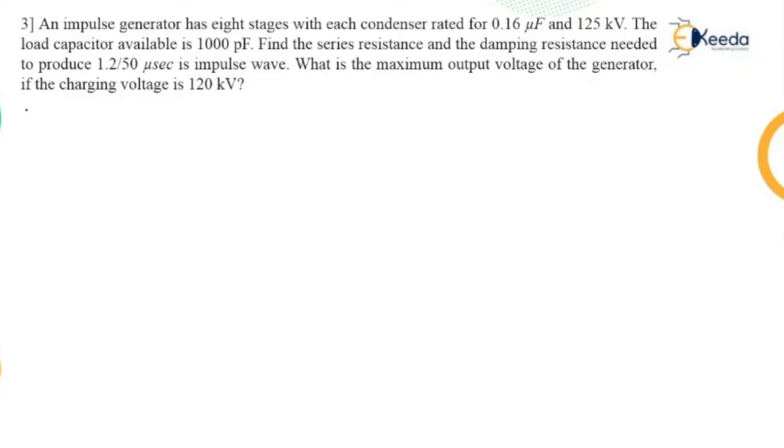The numerical goes like this. An impulse generator has eight stages. So here the number of stages which are mentioned are eight. With each condenser rated for 0.16 microfarad. So therefore the value of C1 is equal to, as eight are connected in the circuit, 0.16 divided by eight that comes out to be 0.02 microfarad.